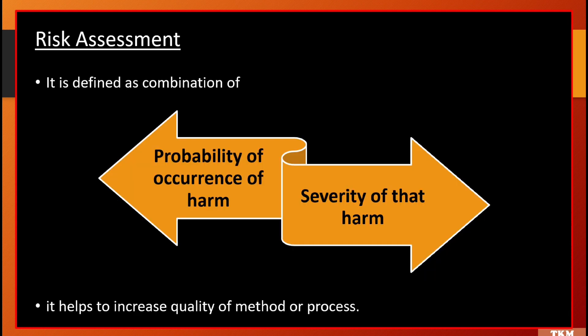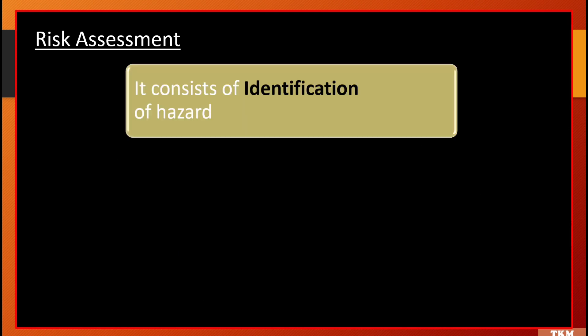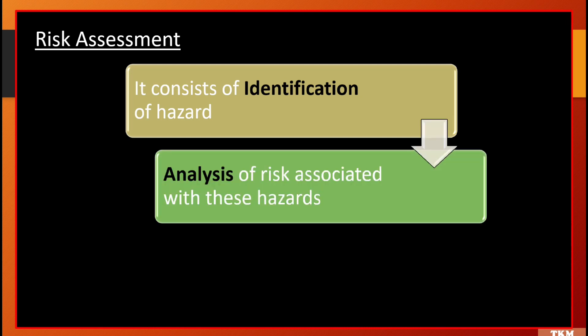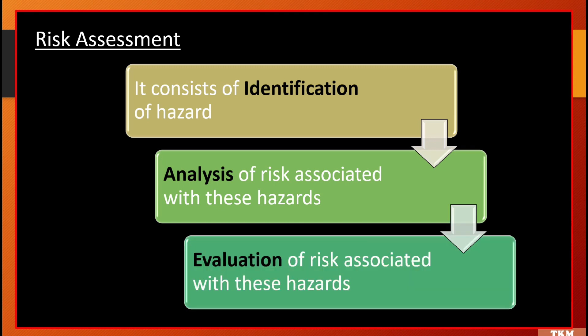Risk assessment is defined as the combination of the probability of occurrence of harm and the severity of that harm — whether that harm can occur, and if it occurs, how severe it is. It helps to increase the quality of a method or process. Risk assessment consists of identification of hazards, then analysis of risk associated with those hazards, and evaluation of risk associated with the hazards.